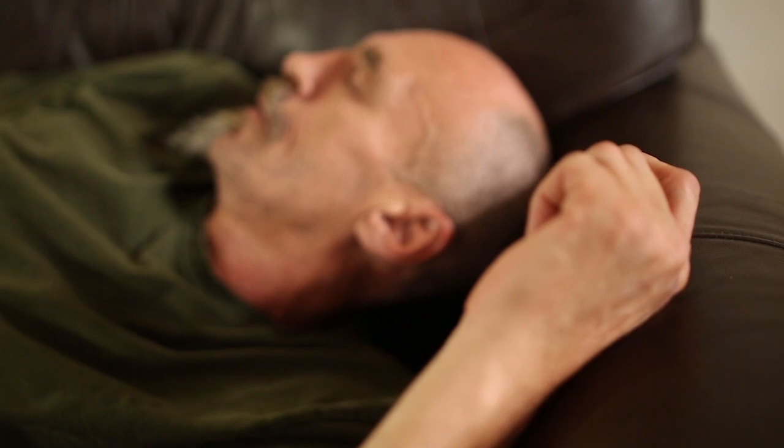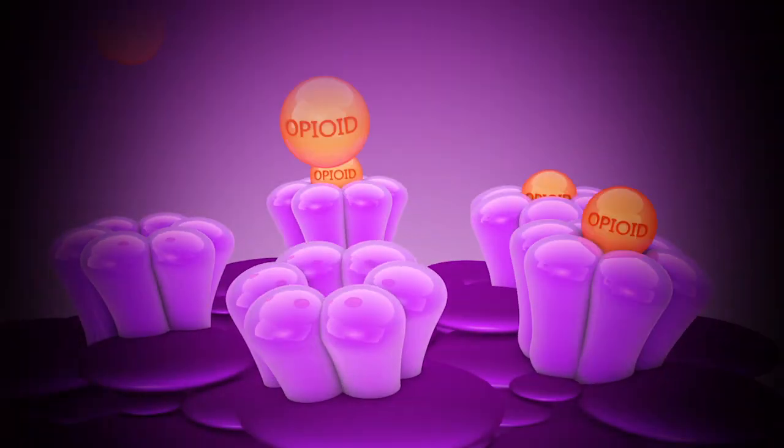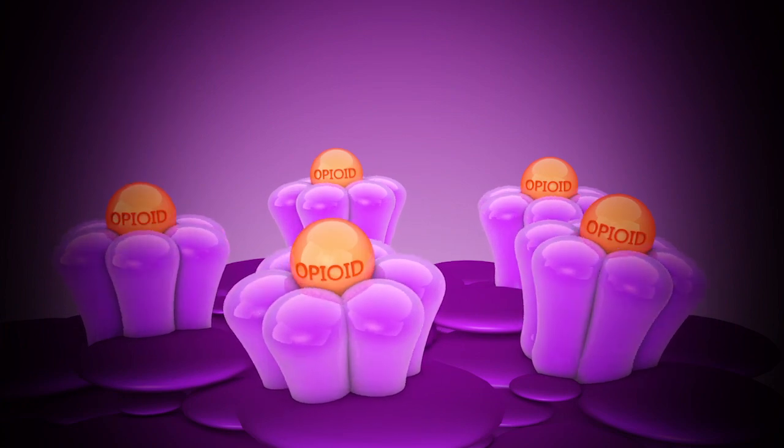Let's begin with understanding what an opioid overdose is and how it affects the body. Opioids work by interacting with receptors in our brain. The opioids fit into these receptor sites, sort of like a key fits in a lock.